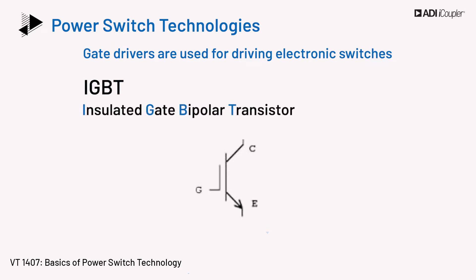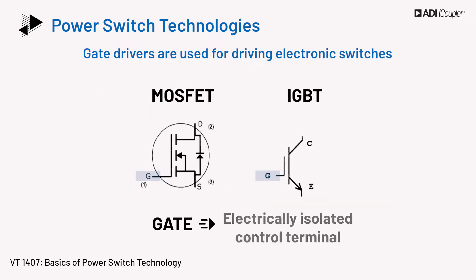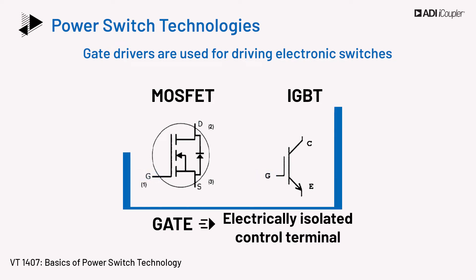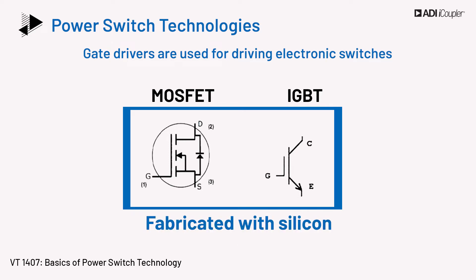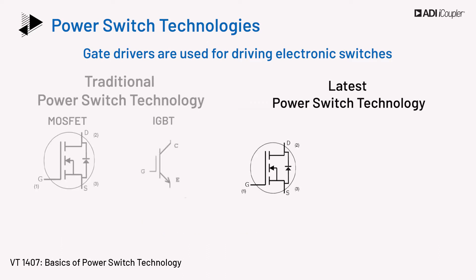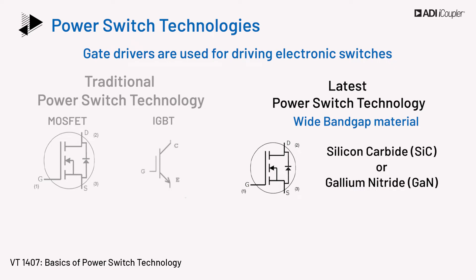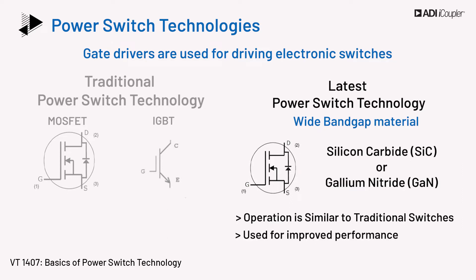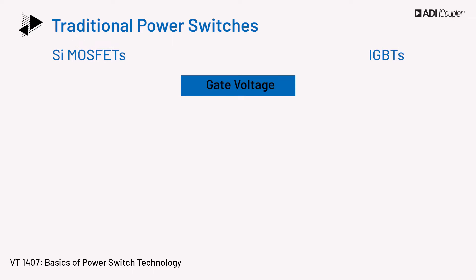IGBT stands for insulated gate bipolar transistor. Its terminals are the gate and emitter. The gate is the electrically isolated control terminal for either device. Both these devices are conventionally fabricated with silicon as the semiconductor. Due to the limitations of silicon-based power transistors, devices using wide bandgap material such as silicon carbide or gallium nitride are finding increasing acceptance. These devices can be operated similar to traditional semiconductors but are used for improved performance. The traditional switches — MOSFET and IGBT — are voltage-controlled devices which can be operated when a voltage is applied to the gate relative to the source or emitter.